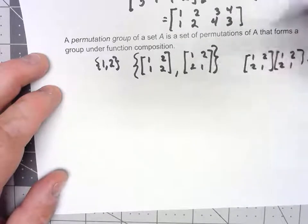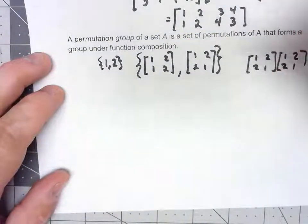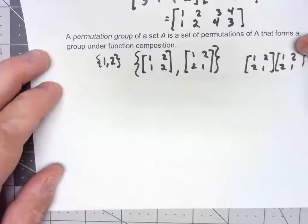It's not hard to show any of the other stuff, associativity, we've got an identity, it's certainly closed, so this is a group, a permutation group, just not a very interesting one.